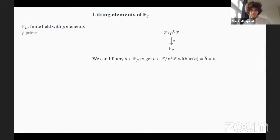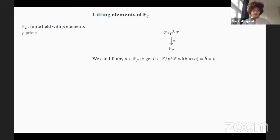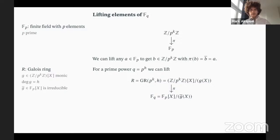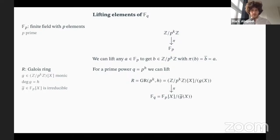If instead of taking a finite field of prime order downstairs we go to an arbitrary finite field F_q, what we get upstairs is a Galois ring — parametrized by P, K, and H, where H is the degree of the extension of F_q over F_p. We still have this surjective homomorphism going from the Galois ring down to F_q. In this work, we are interested in whether we can lift larger structures, concretely linear codes and linear secret sharing schemes.